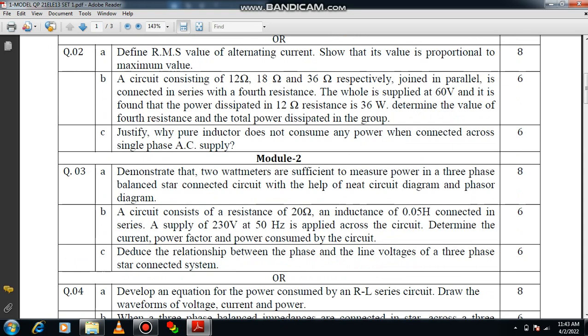Question 3: Demonstrate that two wattmeters are sufficient to measure power in three phase balanced star connected circuit with the help of neat circuit diagram and phasor diagram. You are supposed to draw the circuit diagram for two wattmeter method, then prove that P equals W1 plus W2. You can also draw the phasor diagram. Very simple.